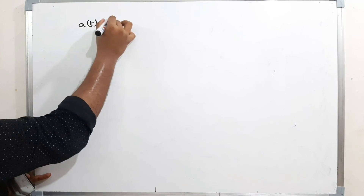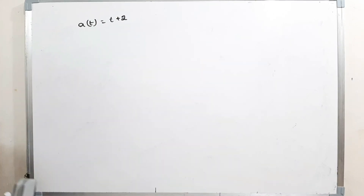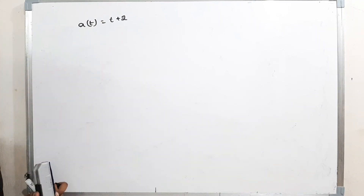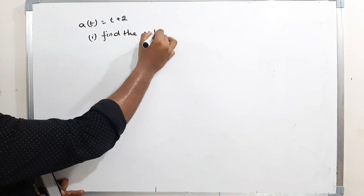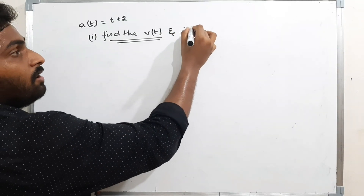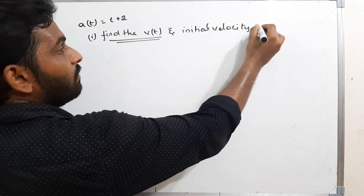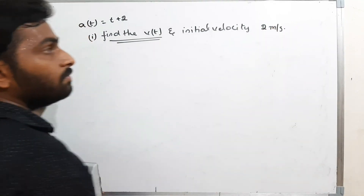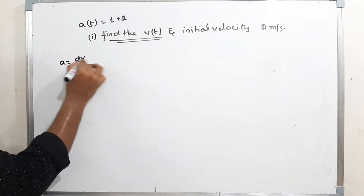A physics application: the acceleration of a body is given by a(t) = t + 2. We need to find the velocity of the body, given that the initial velocity is 2 meters per second. Acceleration is dv/dt, so dv = a·dt.